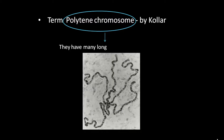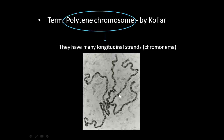The term 'polytene' for polytene chromosome was given by Kohler. This is because this chromosome has many longitudinal strands called chromonemata. It is called polytene chromosome because it has many strands.